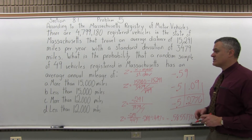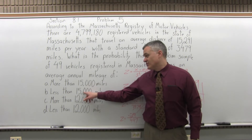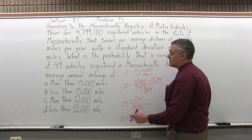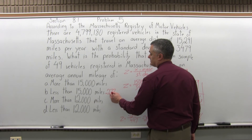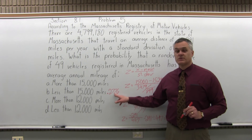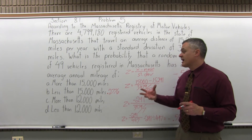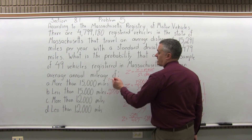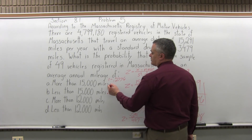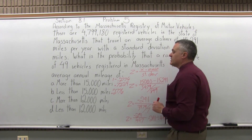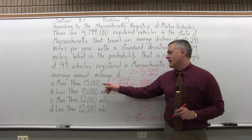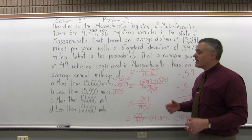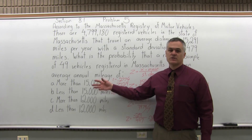That chart value of 0.2776 is the final answer for part B — less than 15,000 — because for a less-than question, the number from the chart is the final answer. That's about a 27.75% probability that a group of 49 cars would have an average less than 15,000. For part A — more than 15,000 — you do one minus the chart value: 1 minus 0.2776 equals 0.7224, about a 72.25% probability.